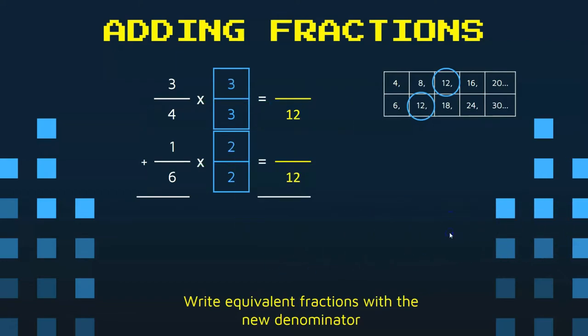In fact, what I'm going to do is I'm going to make big giant ones out of them. That's how we find equivalent fractions. We multiply the numerator and the denominator by the same number. All right, so three times three is nine, and one times two is two.